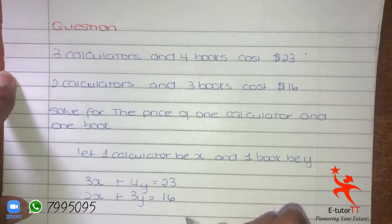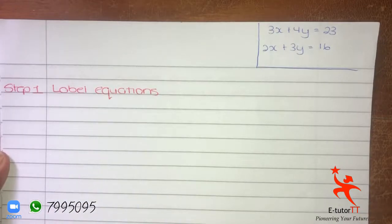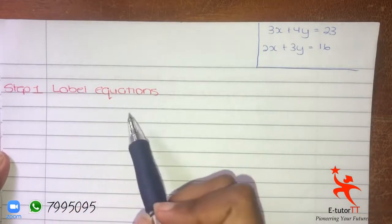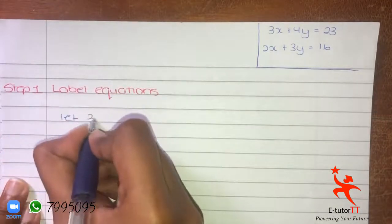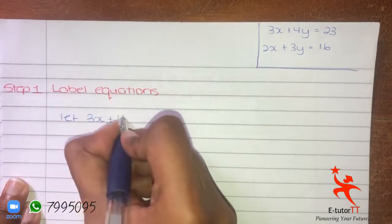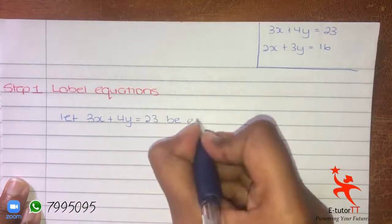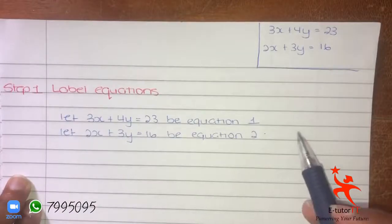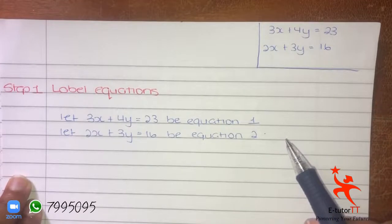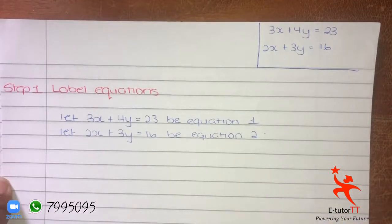Now that we have two equations, we can begin. The first step in any simultaneous equations is to label the equations. So we're going to say: let 3X + 4Y = 23 be equation 1. This step is basically to make it easy to write down our steps so the examiners can follow them easily.